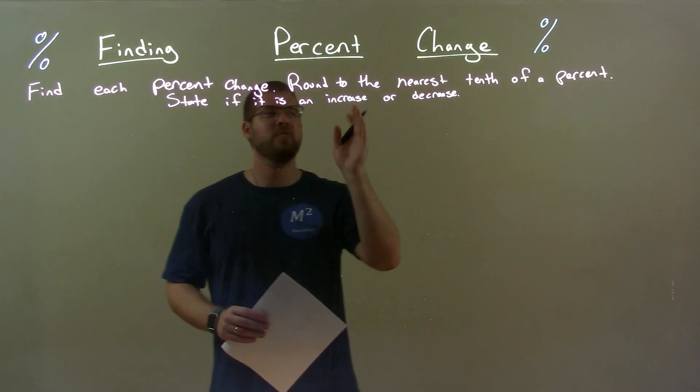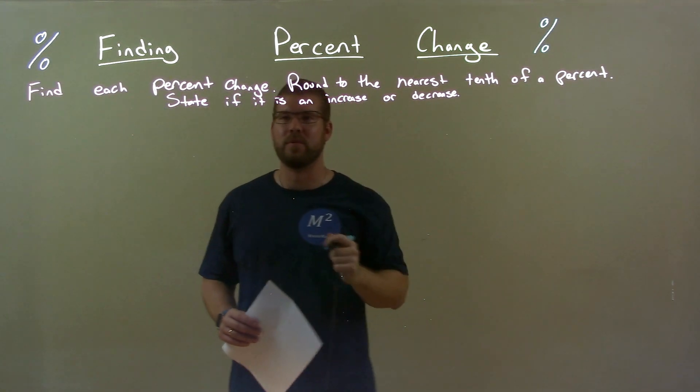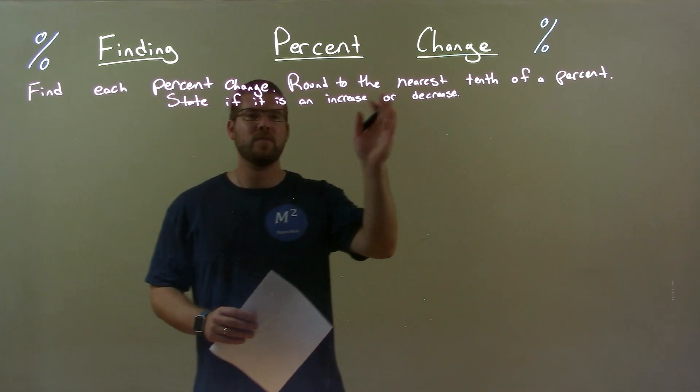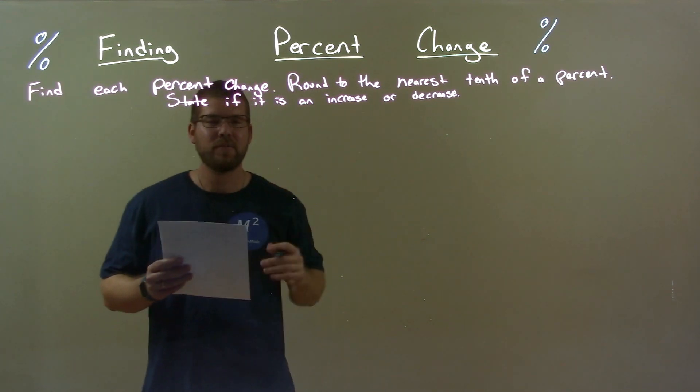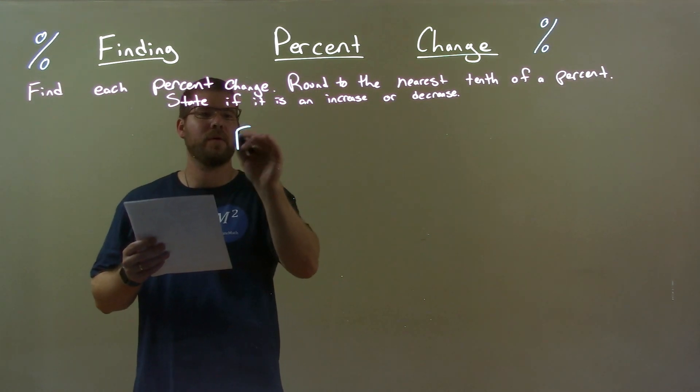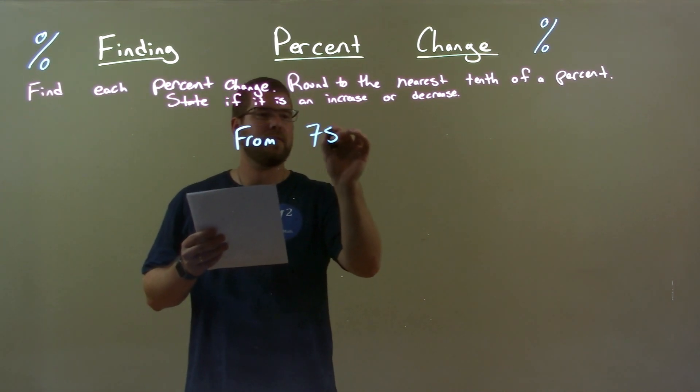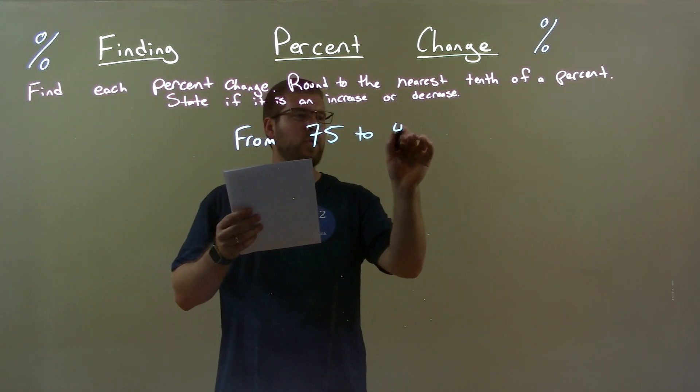We're going to find each percent change and round to the nearest tenth of a percent, stating if it's an increase or a decrease. So, if I was given this problem from 75 to 45,